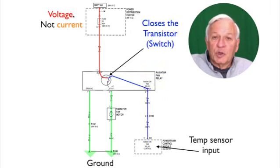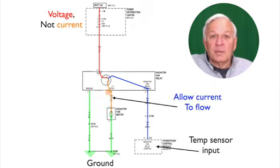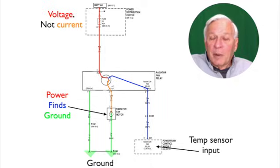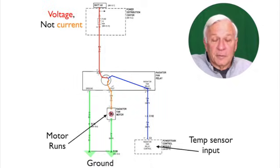When the temperature switch reaches the correct temperature, it sends an input signal to the computer. The computer's logic sends an output signal to the fan relay, which closes the transistor switch. And this allows current to flow out of relay pin number 3, and onto the fan itself. That's where power finds ground. And the motor runs.